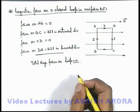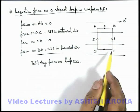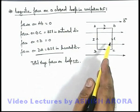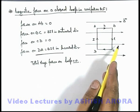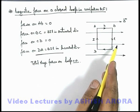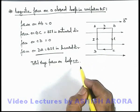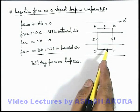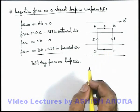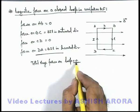We can write: whenever a closed current-carrying loop is placed in a uniform magnetic field, the net force acting on the closed loop will always be equal to zero.